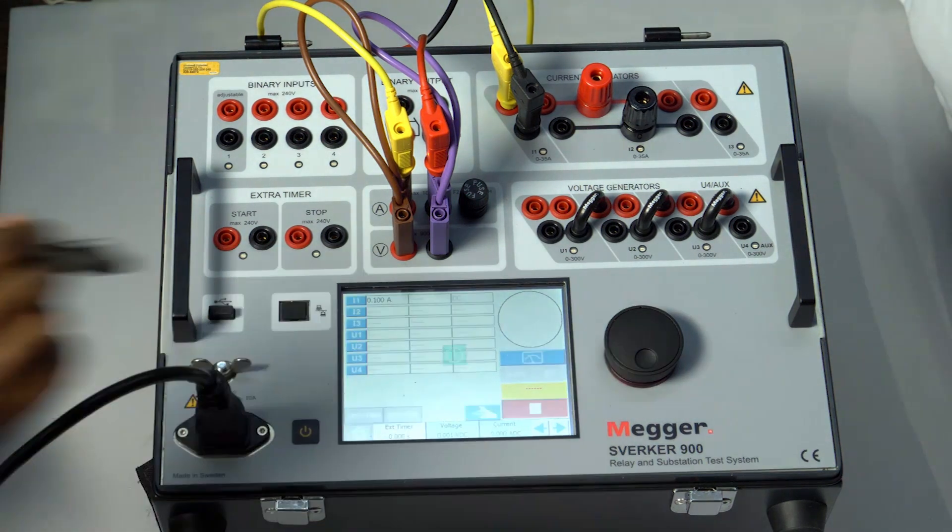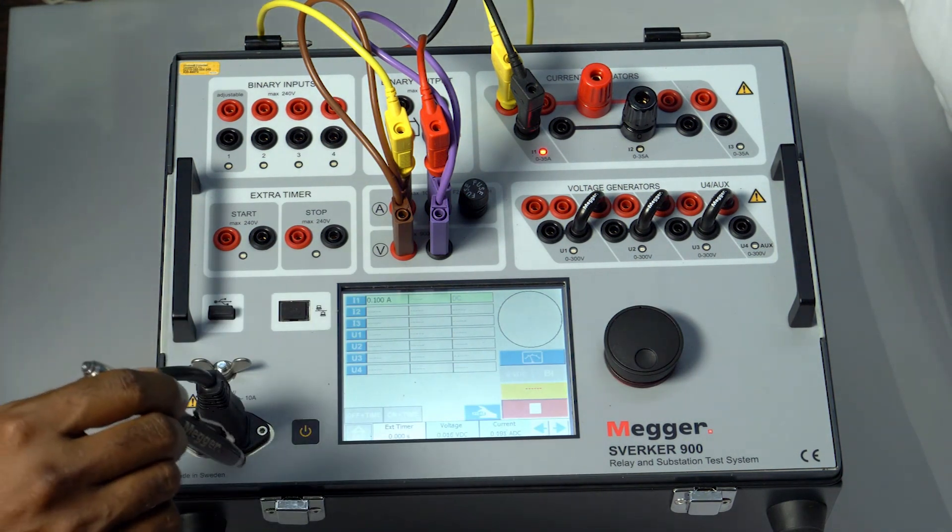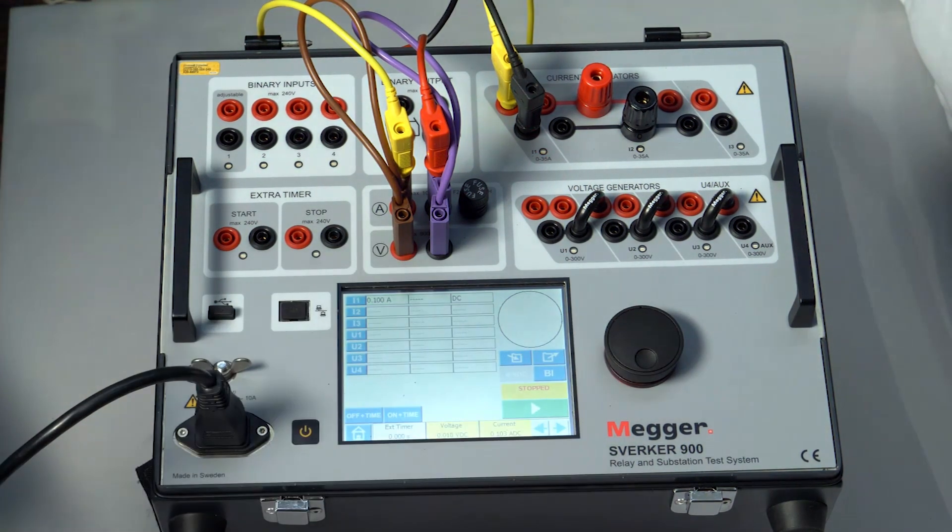Let's inject. Once the values are stabilized, let's stop it. Record the voltage and current values. By dividing the values, we get the resistance. In this example, the voltage is 0.018 and the current is 0.103. The resistance is 0.174 ohms.